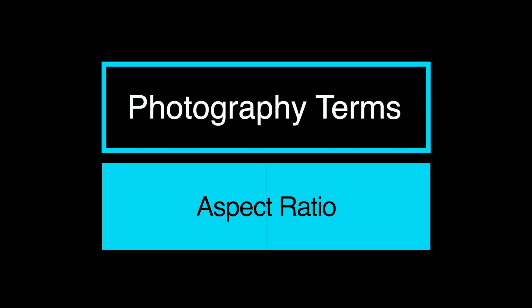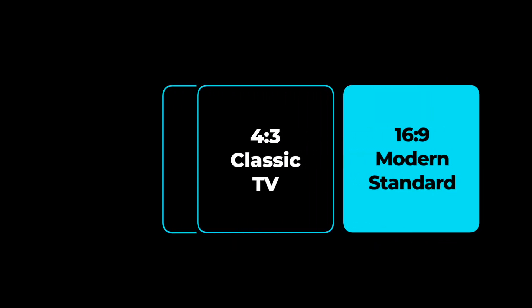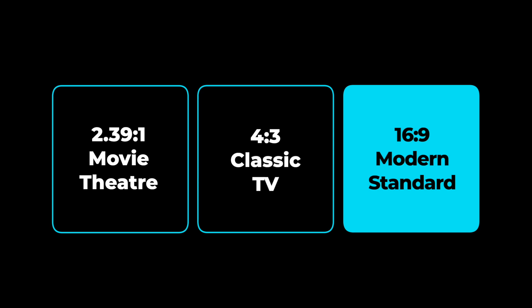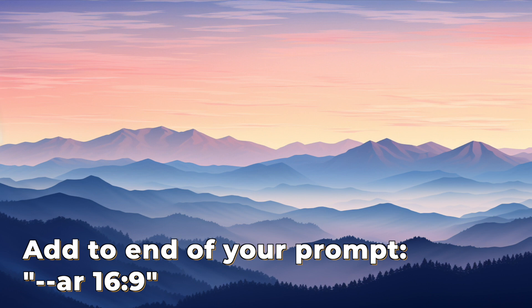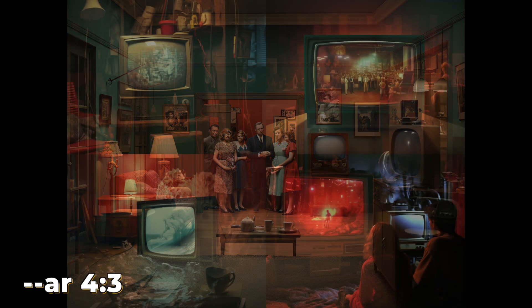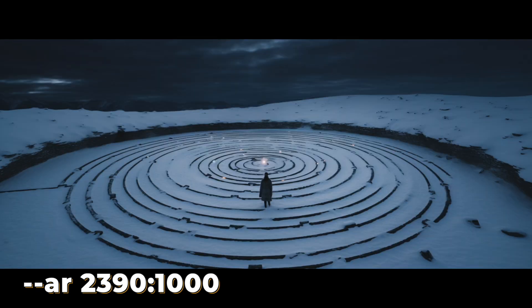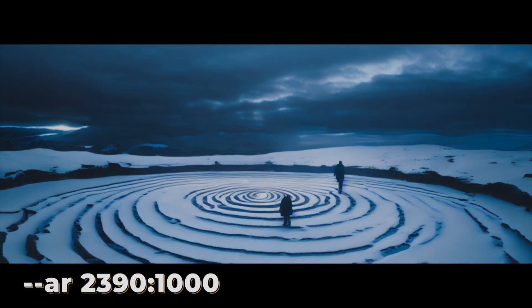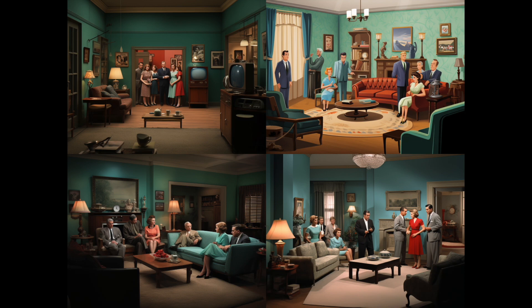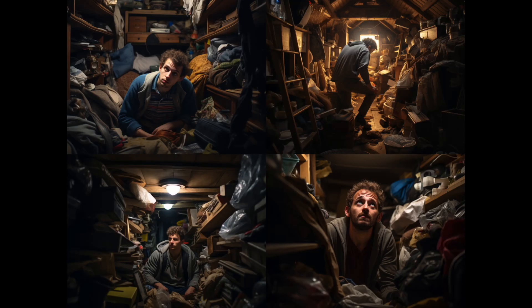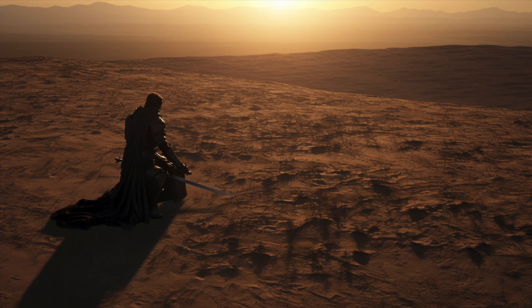For aspect ratio — the relationship between an image's width and its height — here are the three you need to know. 16:9 is the standard for anything modern on TV or computer. 4:3 is for classic TV from the 80s and 90s. And for something really cinematic, 1.85:1 and 2.39:1 are what you see at theaters, with 2.39 being most common today. A 2.39 ratio lets an audience soak in a sweeping landscape, while 4:3 can evoke nostalgia or claustrophobia.